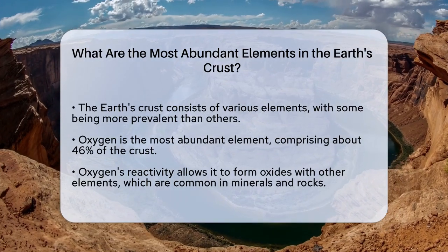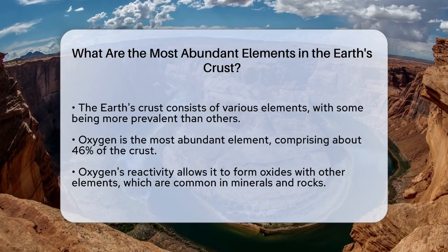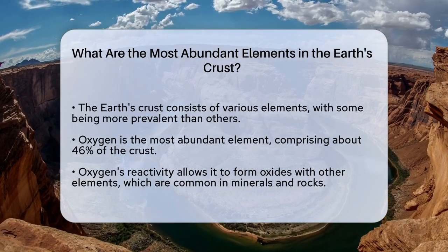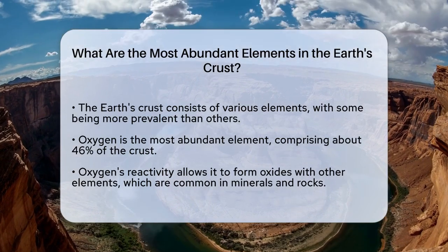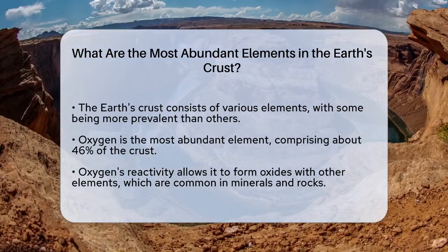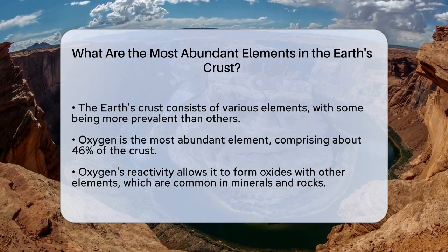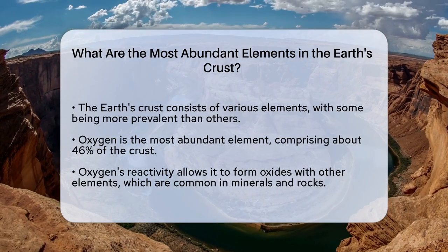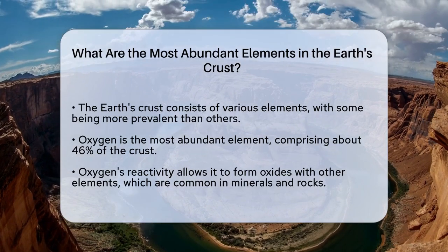The most abundant element is oxygen, which makes up about 46% of the Earth's crust. This is because oxygen is highly reactive and combines easily with other elements, forming oxides that are found in many minerals and rocks.